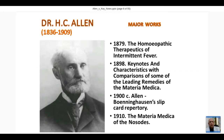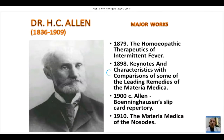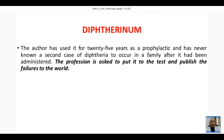Further, in 1900, Allen published Boenninghausen's Slips Card Repertory, and in 1910 another work was published posthumously - written by him earlier but published after his death. One more important thing everyone must know: he treated an epidemic of diphtheria with Diphtherinum and was so confident of using it that he asked the profession to put it on test and publish the failures to the world.